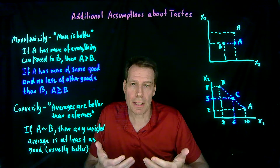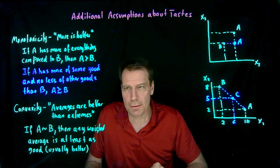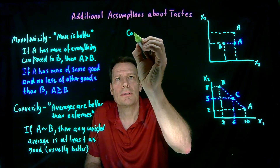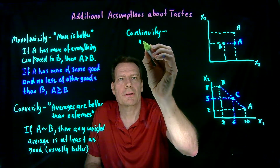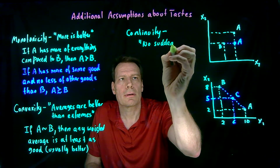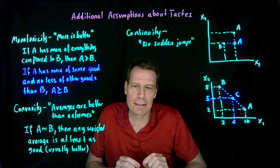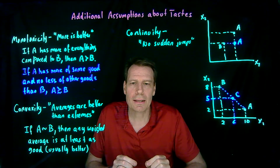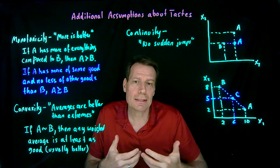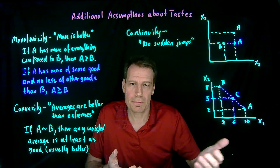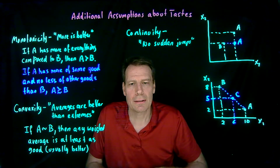So monotonicity expresses the fact that we tend to want more of everything, and convexity expresses the fact that we tend to have a taste for variety. There's a third assumption I'll mention only in passing: the continuity assumption, sometimes called the no sudden jumps assumption. It basically says that if we give you tiny increments more of something, you won't suddenly have a huge jump in how you feel. Tiny changes cause tiny changes in how you feel, not huge jumps. We could state this more formally, but there's no need to — I'll mention it when we need it in the future.